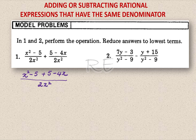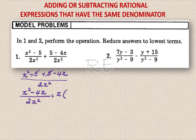Now we need to simplify. x squared minus 5 plus 5 is 0, so we get x squared minus 4x divided by 2x squared. When we factor x in the numerator, we obtain x times x minus 4 divided by 2x squared. We can cancel x.